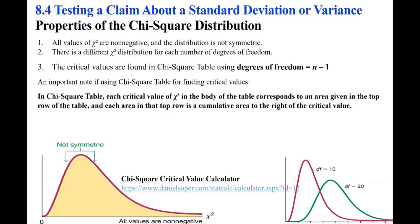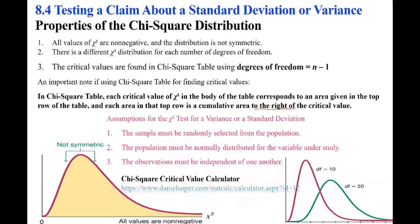Remember how that table works — I can't emphasize this enough. The assumptions for the chi-square test for variance or standard deviation are: one, the sample must be randomly selected; two, the population must be normally distributed for the variable under study; three, the observations must be independent of one another.